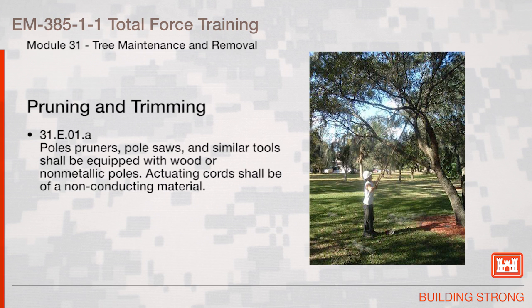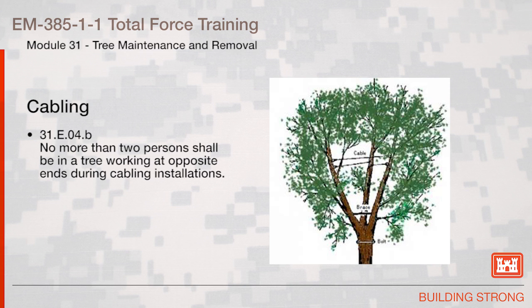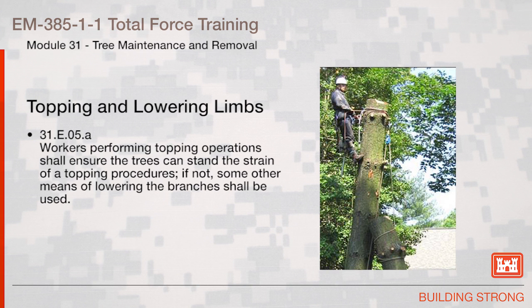Pruning and trimming: Pole pruners, pole saws, and similar tools shall be equipped with wood or non-metallic poles. Actuating cords shall be of a non-conducting material. Stump removal: Stump cutters shall be equipped with enclosures or guards that effectively protect the operator. Cabling: No more than two persons shall be in a tree working at opposite ends during cabling installations. Topping and lowering of limbs: Workers performing topping operations shall ensure the trees can stand the strain of a topping procedure. If not, some other means of lowering the branches shall be used.